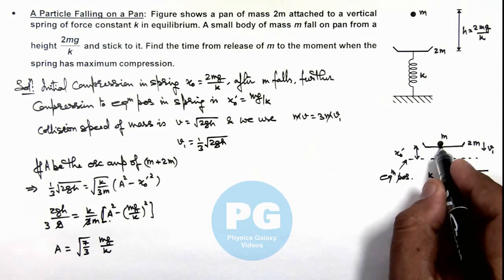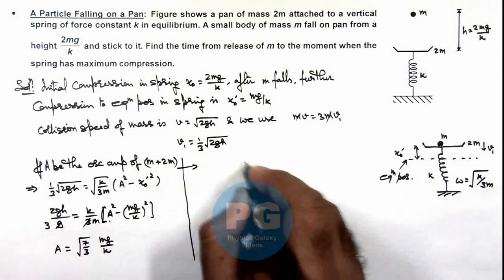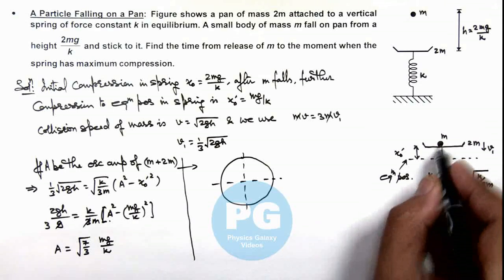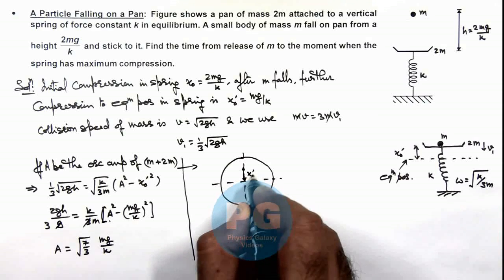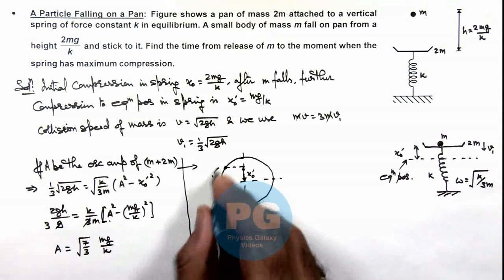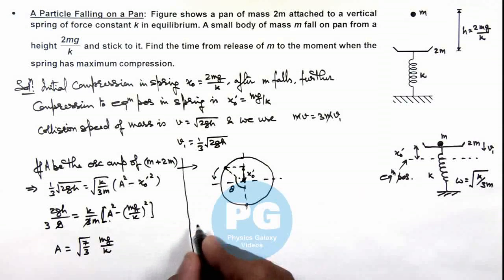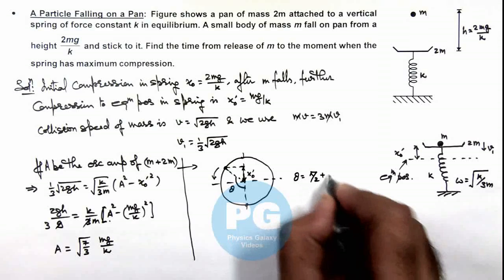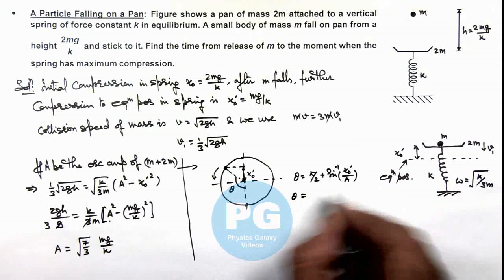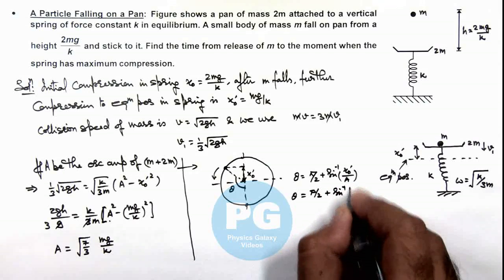To find the time to reach the extreme position in oscillation, we map the motion onto circular motion. The amplitude of oscillation is A, and the body starts at a distance x₀' from the mean position and moves downward. The reference particle comes down and we find the time it reaches the extreme bottom position. The change in phase required is θ = π/2 + sin⁻¹(x₀'/A). Substituting x₀' = mg/k and A = √(7/3)·(mg/k), we get θ = π/2 + sin⁻¹(√(3/7)).